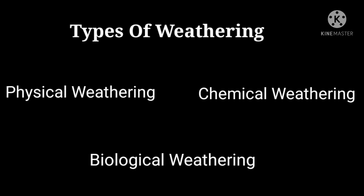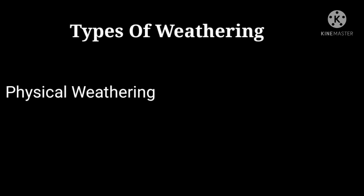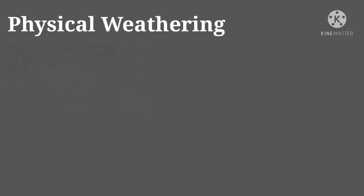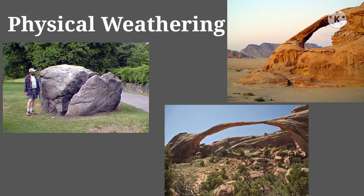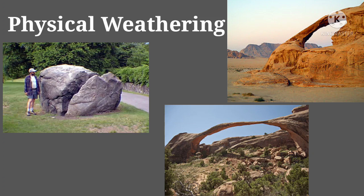Weathering is broadly classified into three types: physical weathering, chemical weathering, and biological weathering. Physical or mechanical weathering is the major type, in which rocks get disintegrated or break down due to various physical processes without chemical decomposition — such as change in temperature, frost action, and crystal growth — all factors due to which the rock gets disintegrated.